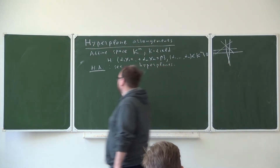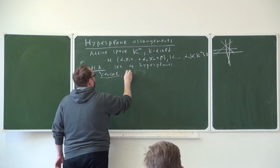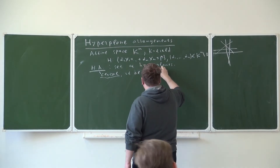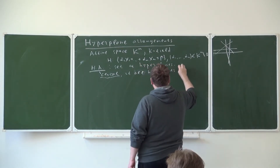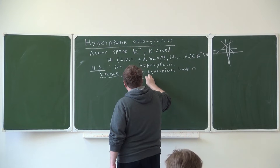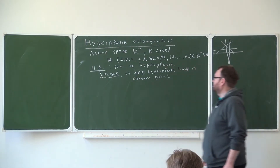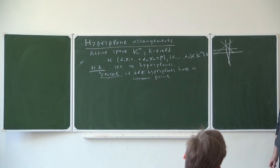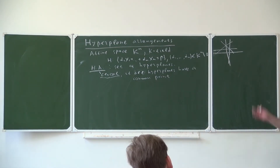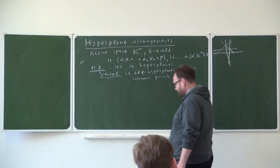Several definitions about this object. We say that a hyperplane arrangement is central if all hyperplanes have a common point. In this case, they may be translated so that the hyperplanes become linear, with zero on the right-hand side.